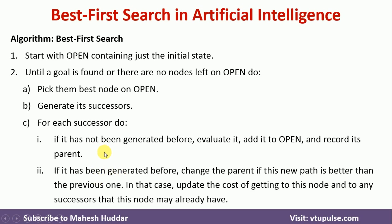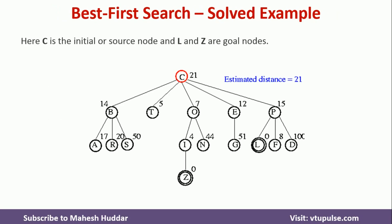These two steps are repeated unless and until we reach either the goal state or we have no nodes in the open data structure. Once you apply this, either we get the goal state or we end up with a failed state because the path may not exist between the initial state and the goal state. Now we will take a simple example — let us say that we have some different nodes connected using edges, and we have been given the distance for each node or edge.